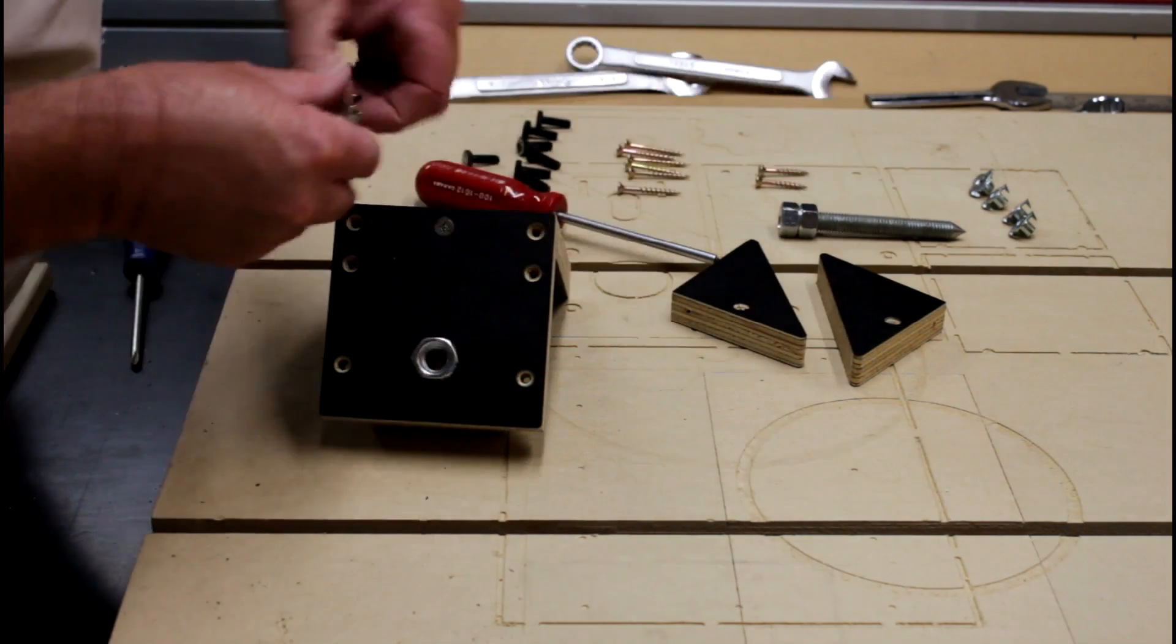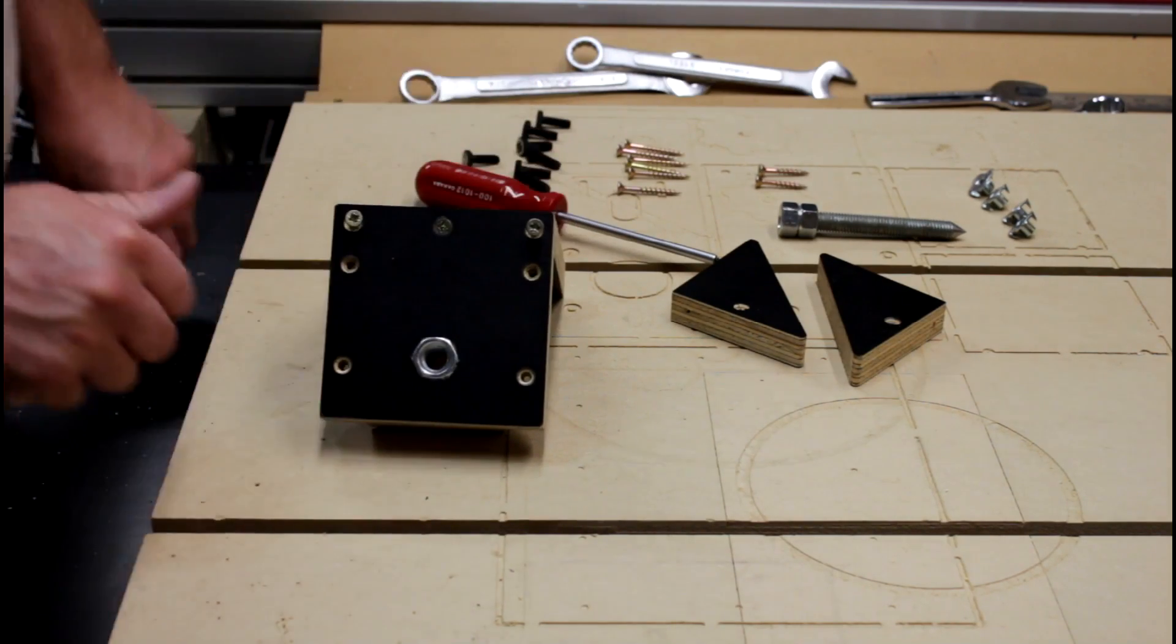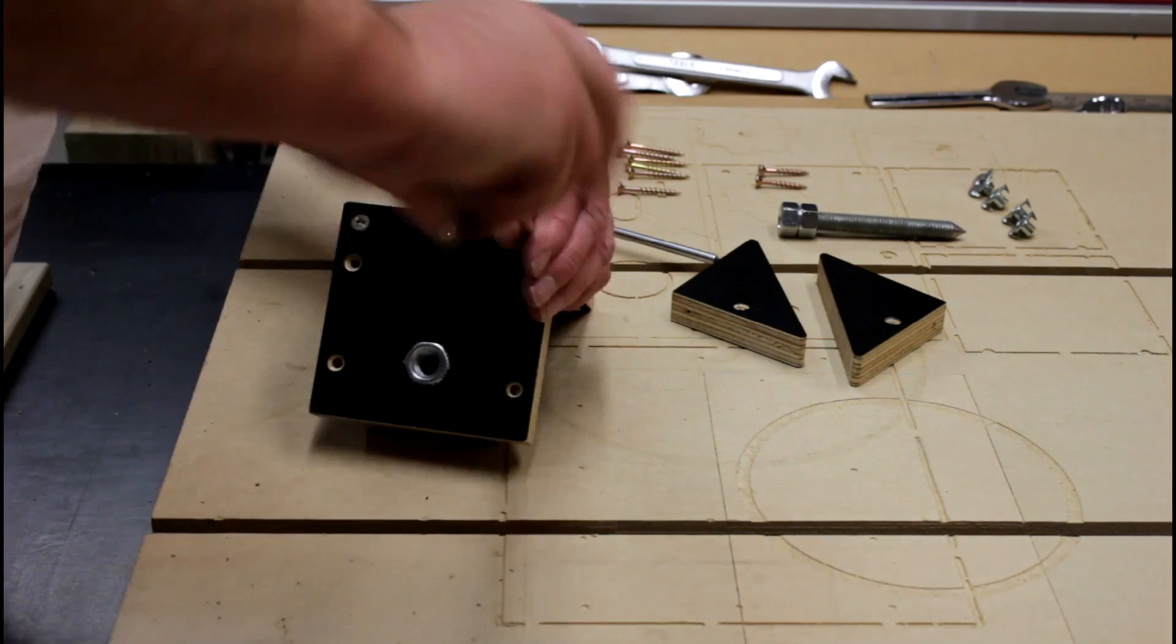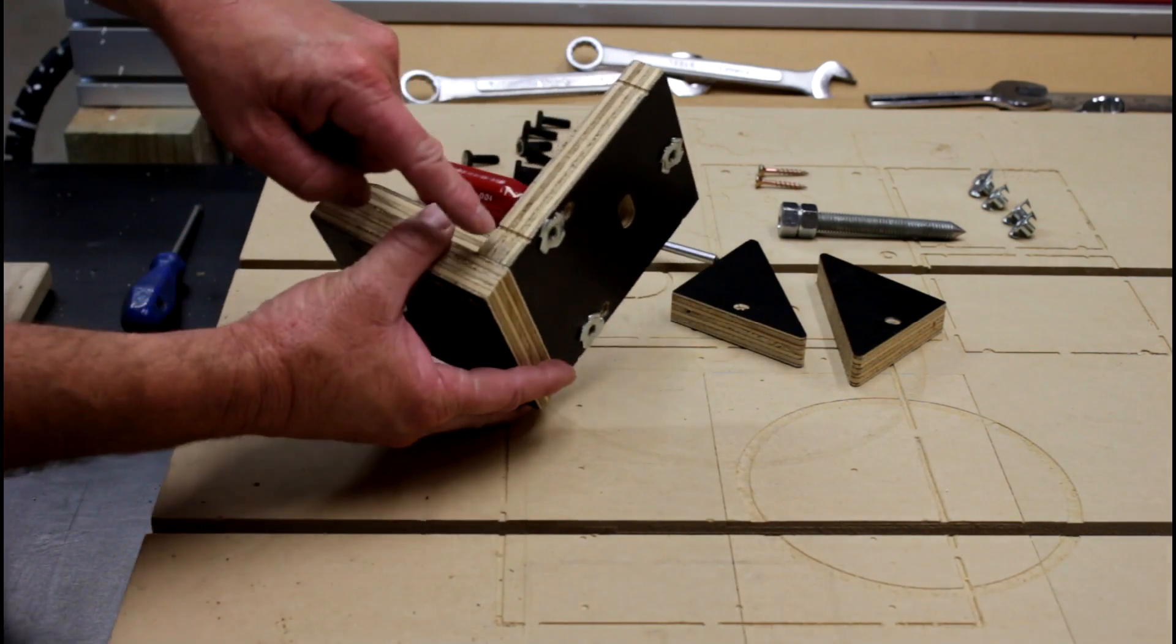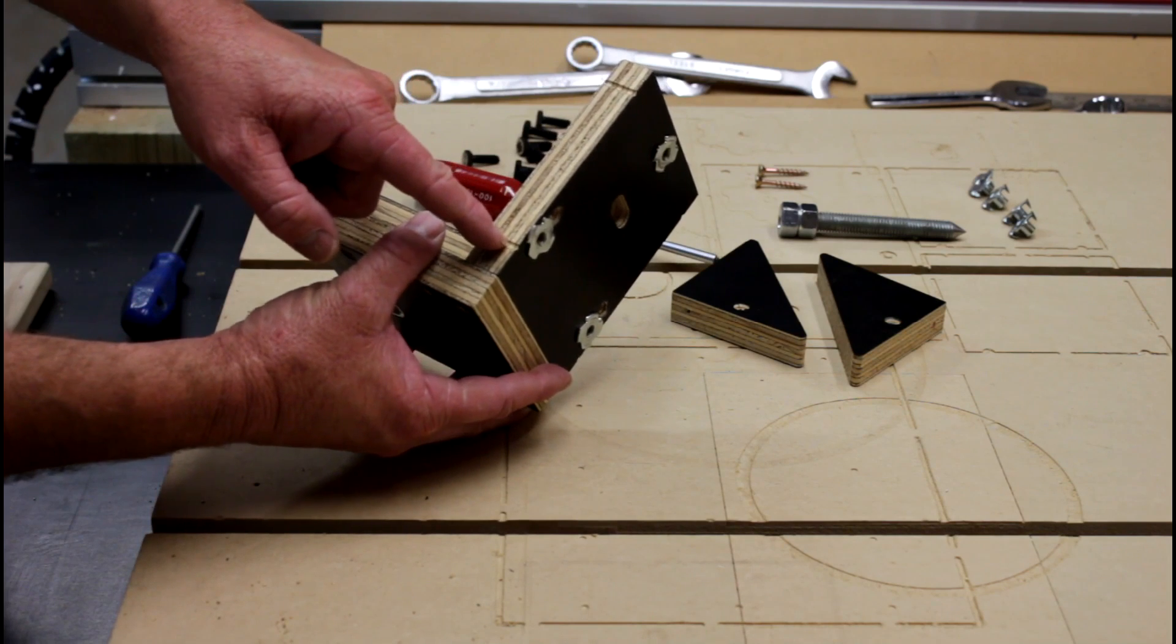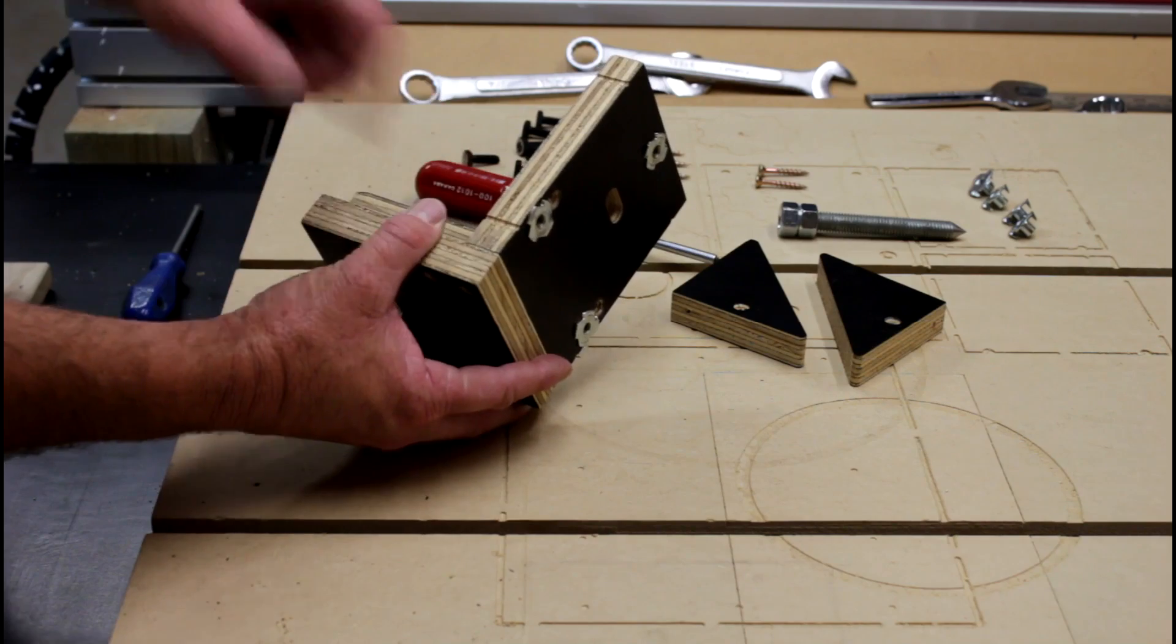Now the next two screws are going to be one inch screws. Now the reason we only want one inch screws is because along this side here we're actually going to be putting another T-nut and if we make it any longer than that it's going to be in the way.